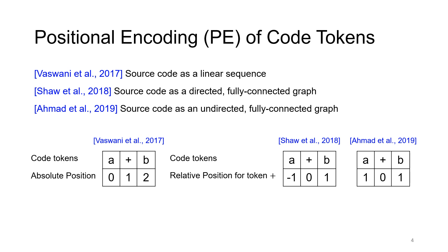We show an example here. For the expression A plus B, absolute position encoding uses the token's index to form their respective position representation. On the other hand, the relative position encoding models the pairwise distance between code tokens. We consider two variants of relative position encoding: in one variant, we compute relative distances based on whether a token is on the left or right of the target token. In the second variant, we simply ignore the direction, treating the source code as an undirected graph.